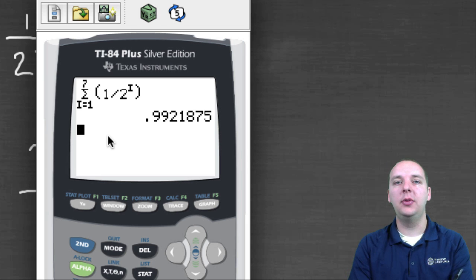You push enter and it looks like this summation is 0.9921875. That would have taken us a long time to do by hand, but boy, that was really fast. Now, what about for everybody else who has those older style calculators that doesn't have this type of symbolic summation?